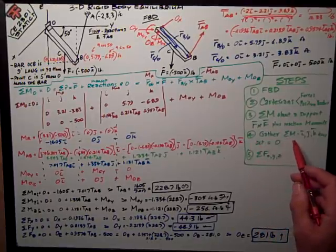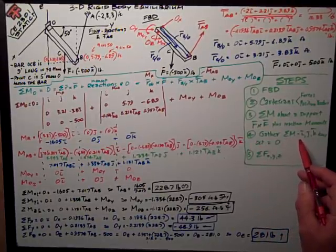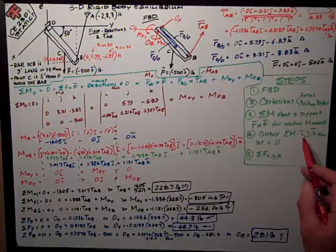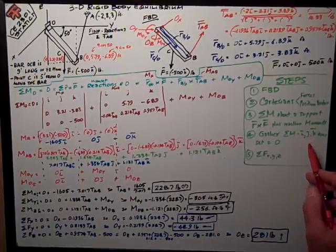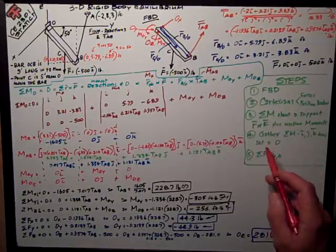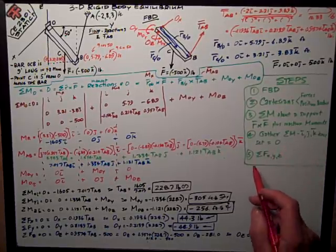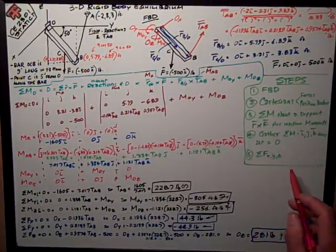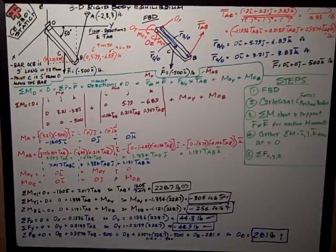Step four is to gather all of my common terms, my moments about the I, J, or K, or in the X, Y, Z direction, about those axes, and set those equal to zero. And then finally, do a sum of forces in the X, Y, and Z to get the other reactions.